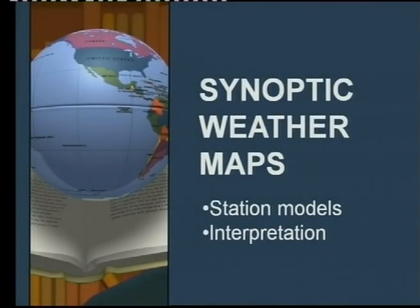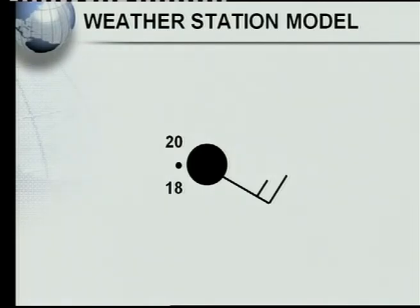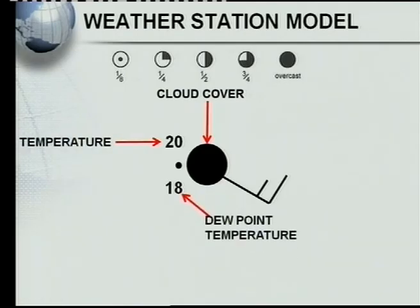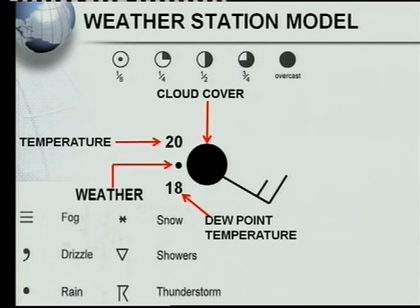I want to conclude with synoptic weather maps. We'll have a look at the weather station models - this is very important that you must be able to interpret them. Inside every weather station is represented by a circle showing cloud cover: one eighth, one quarter, half, three quarters, or overcast. The temperature is found on top, the dew point temperature at the bottom left, and the weather symbol in the middle - which can be fog, snow, drizzle, showers, rain, or thunderstorms.